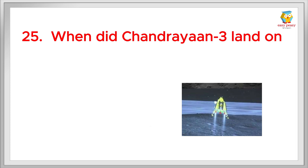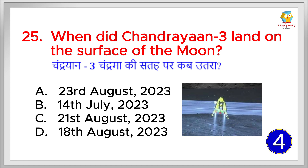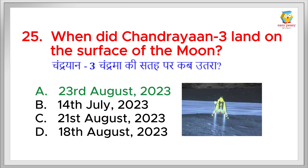When did Chandrayaan 3 land on the surface of the moon? Chandrayaan 3 Chandrama ki satah par kab utra? It landed on the moon on 23rd August 2023. It was a big moment for India indeed.